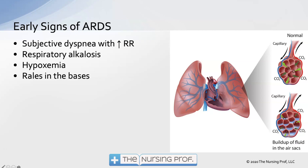The early stages of ARDS include subjective dyspnea with an increase in respiratory rate. This is very subtle — your patient tells you they can't catch their breath, respiratory rate is around 24, and their lungs may even sound clear at that point. But that could be an early sign. If this patient has risk factors for ARDS, we need to be concerned and start looking for respiratory alkalosis.